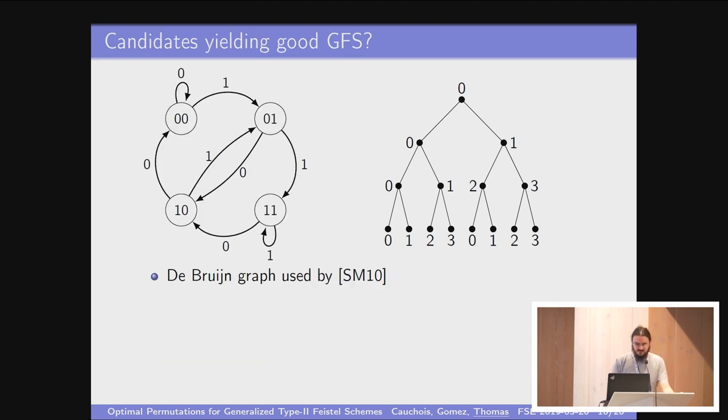Actually what was used in the Suzaki and Minematsu paper to construct this kind of graph is the so-called De Bruijn graph. De Bruijn graph is simply a graph with 2 to the n nodes. The nodes are labeled using all the binary numbers with n bits. Here is the case for n equals 2. So you have 00, 01, 10, and 11. You draw an edge as follows: you take, for example, 00, you drop the leftmost bit, so you end up with 0, and you add the label on the edge to form the label of the new node. So 00, drop the leftmost 0, add a 0 to the right, you end up still on 00. 00, drop the leftmost 0, add a 1 to the right, you end up on 01, et cetera.